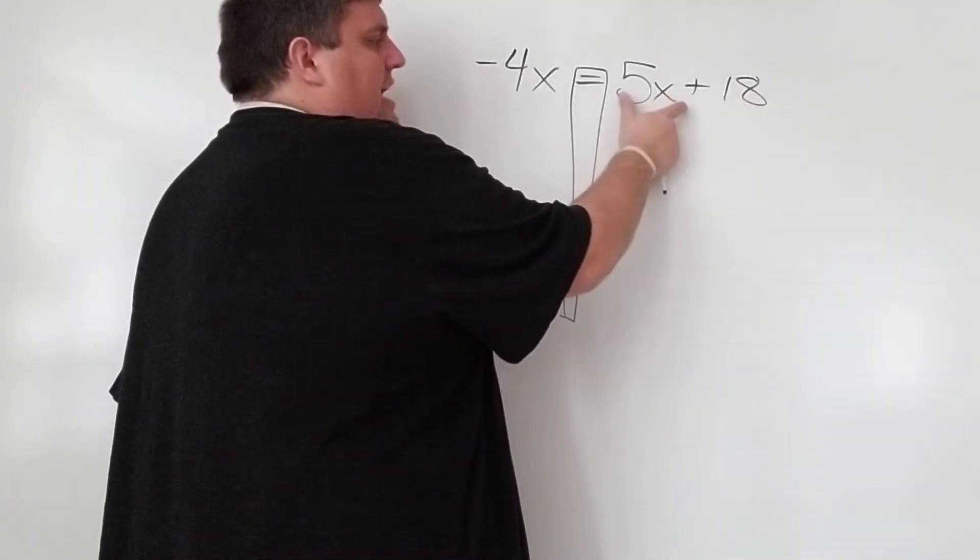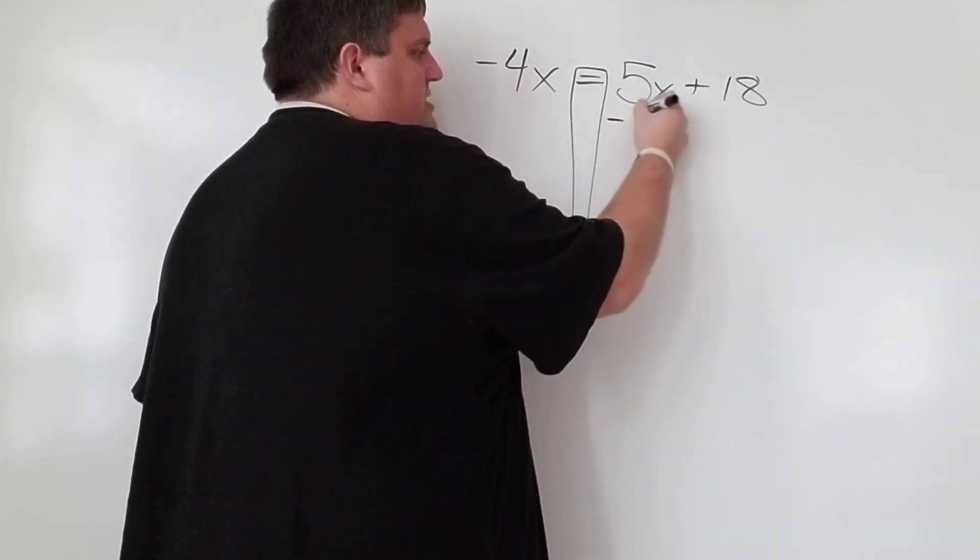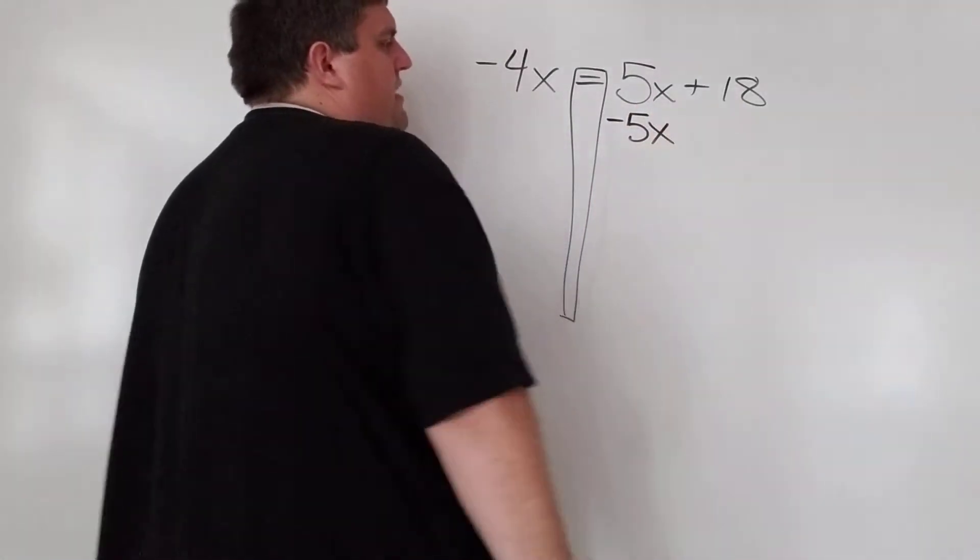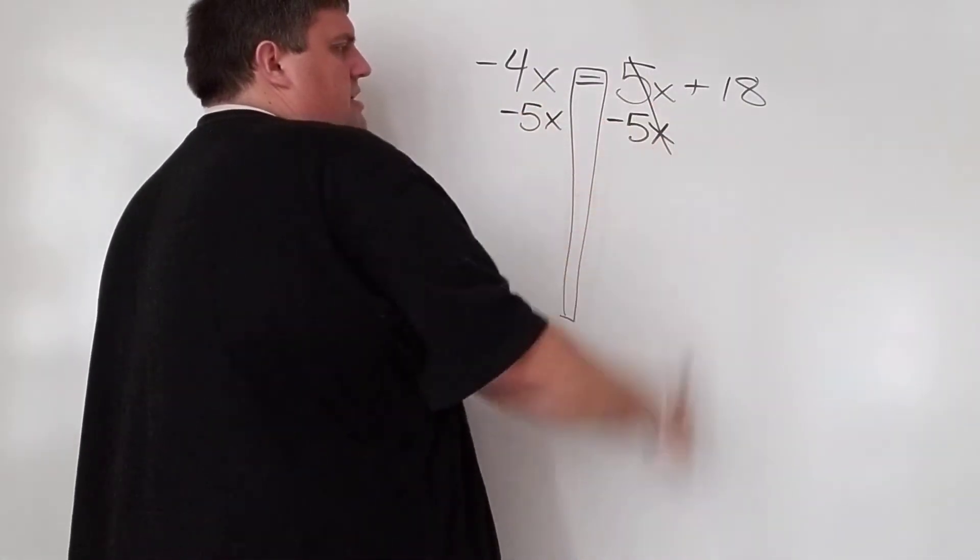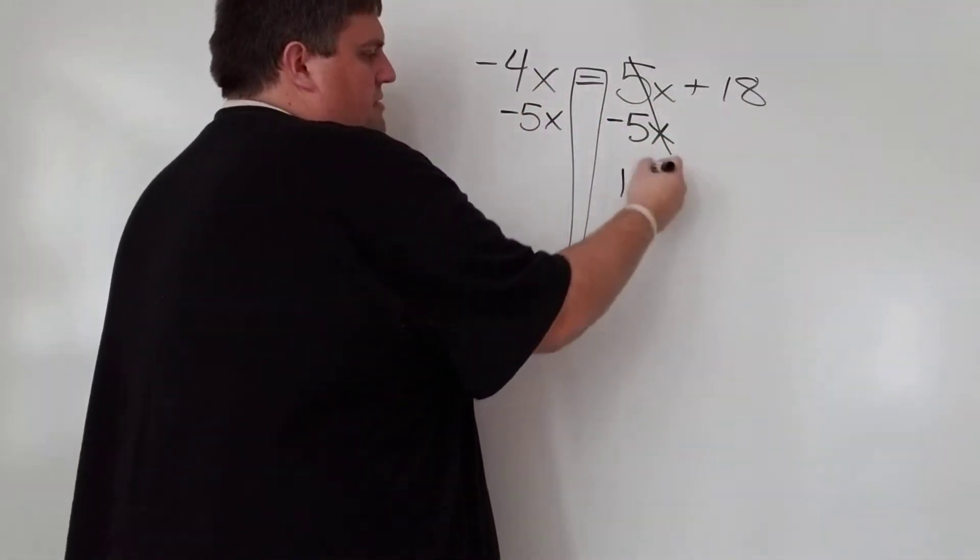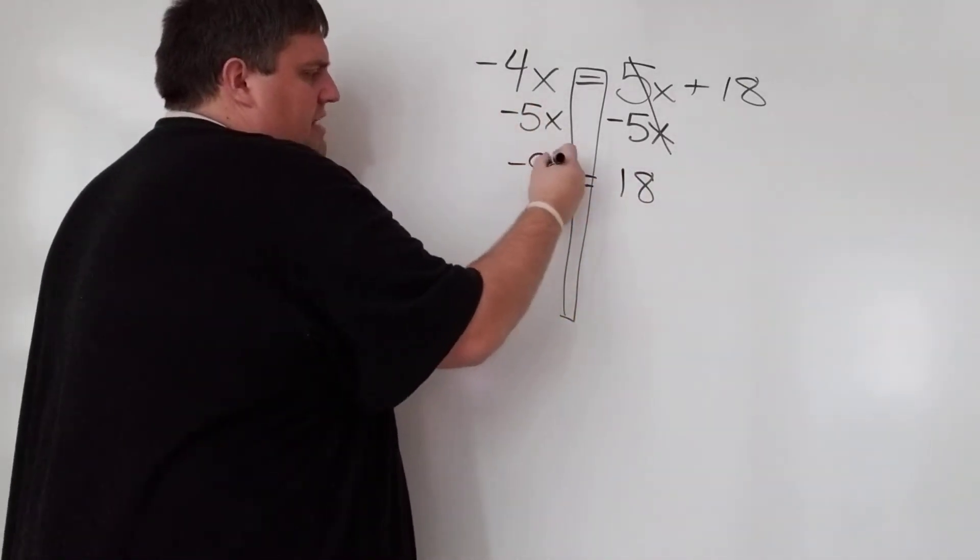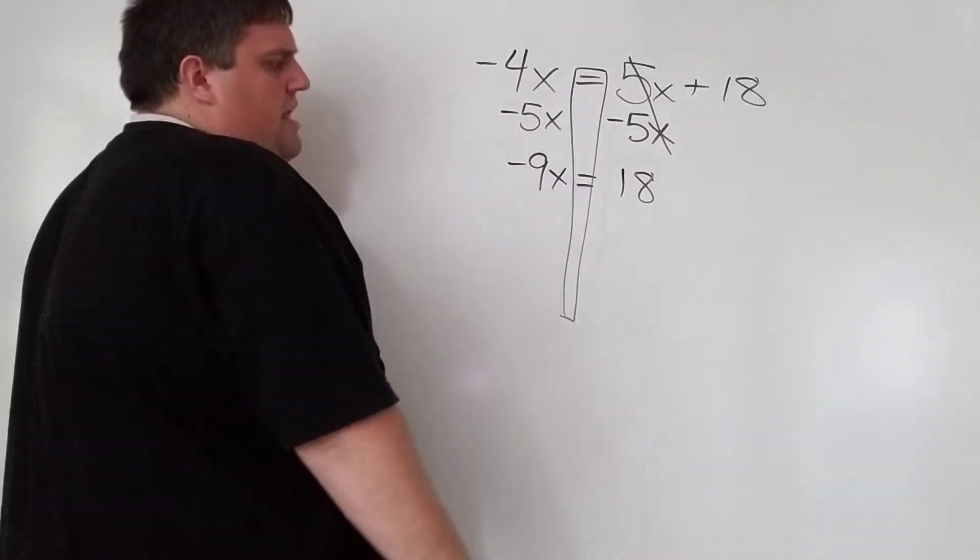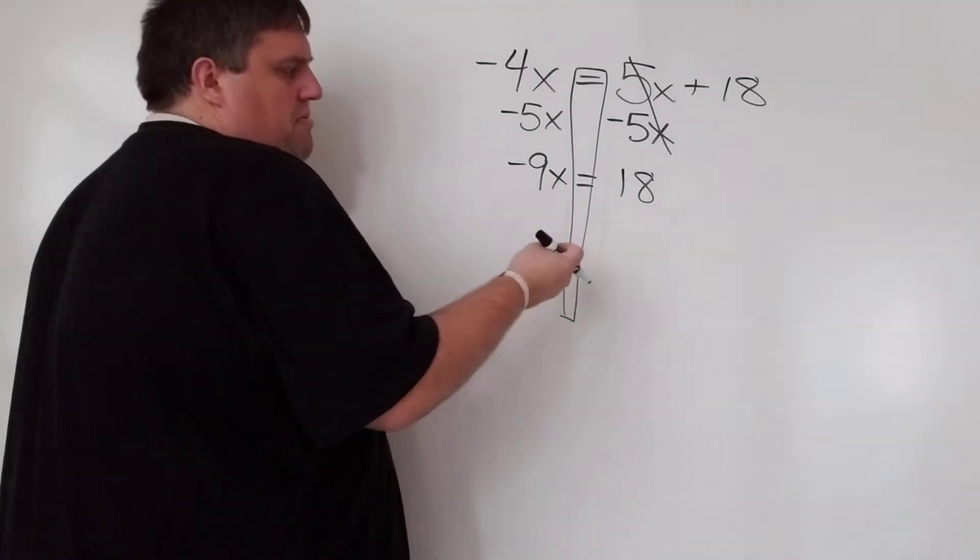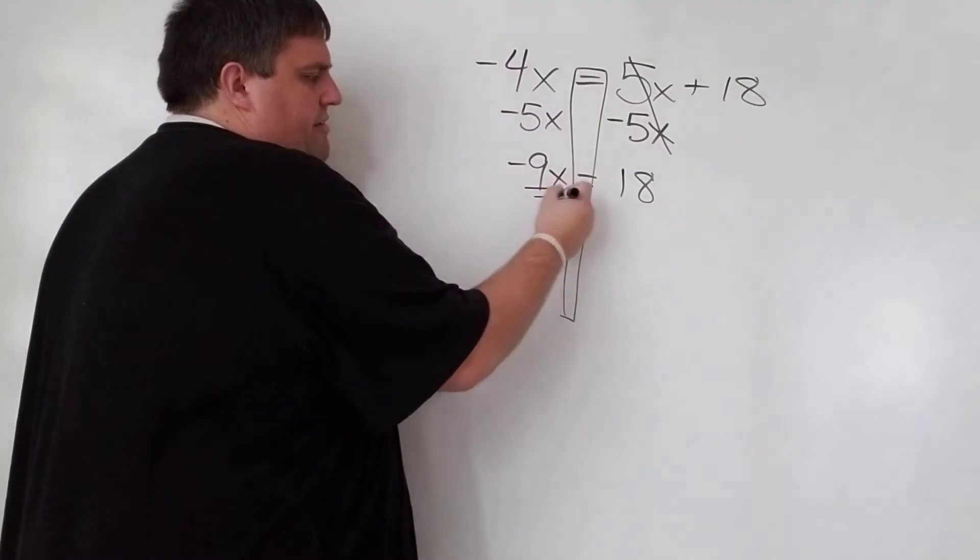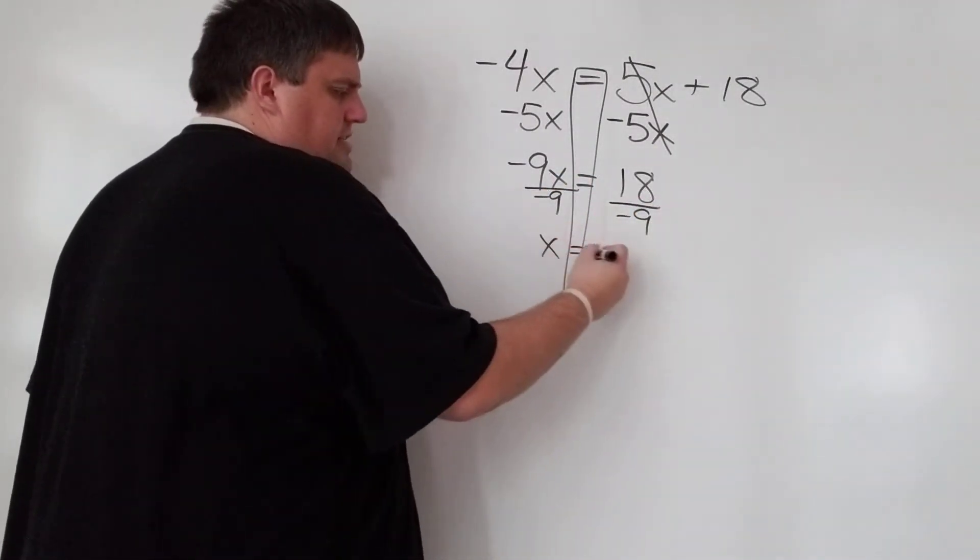So here's 5x. How am I going to get rid of 5x? Well, it's positive 5x. I need to subtract 5x to get rid of it. So subtract 5x from both sides. Those cancel out, leave me with 18. Negative 4x minus 5x is negative 9x. And then, as you can see, we're actually down to not even a two-step equation. It's just one. I want to get rid of negative 9, so I'm going to divide by negative 9. And x is negative 2.